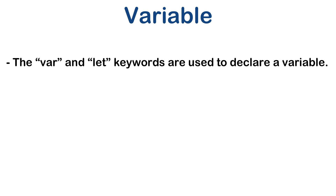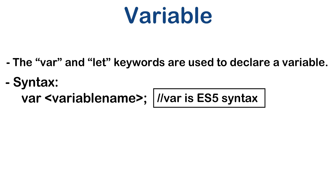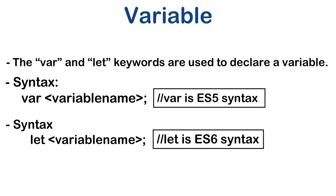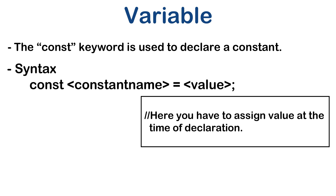Let's start declaring and using variables practically. The var and let keywords are used to declare a variable in JavaScript. var is ES5 syntax which is still valid, but often you will see let or const used with ES6 syntax. In ES6 we use the let keyword to declare a variable. If you want to declare a constant, you can use the const keyword: const constantName = value.